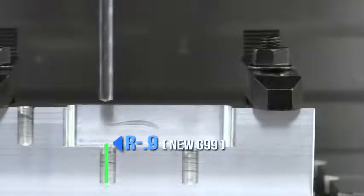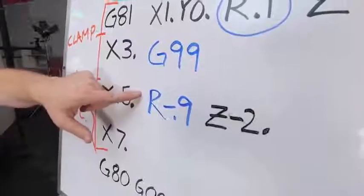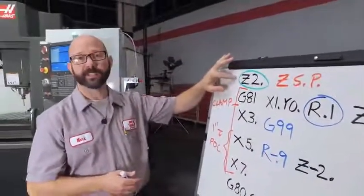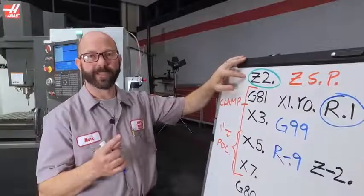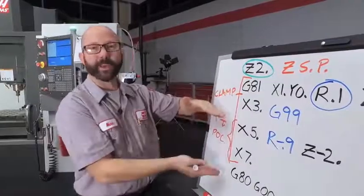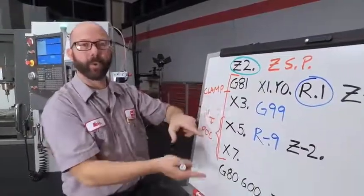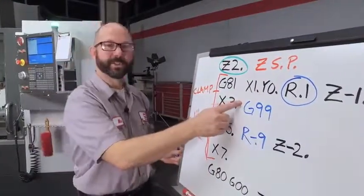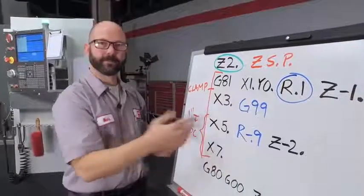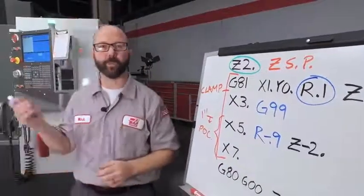Now, some of you might be asking, why did I change my rapid plane instead of my Z starting position? Well, we can only set our Z start position once per can cycle prior to entering that can cycle. Once we're going line by line, hole by hole, we can only change it from a G98 to a G99 or change our R value. Let's go ahead and make a change to our code and watch the program run.